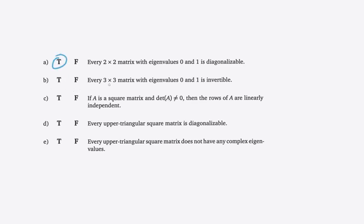Part B: true or false — every 3x3 matrix with eigenvalues 0 and 1 is invertible. The 3x3 information is actually a red herring — it doesn't tell you anything. Parts A and B are testing whether you know the difference between diagonalizable and invertible, and when the dimension of the matrix matters. This is easy because there's a theorem that says if a matrix has an eigenvalue of 0, then it is not invertible. So it doesn't matter the size, and it doesn't matter that the other eigenvalue is 1. Any matrix with eigenvalue 0 is not invertible, so this is false.